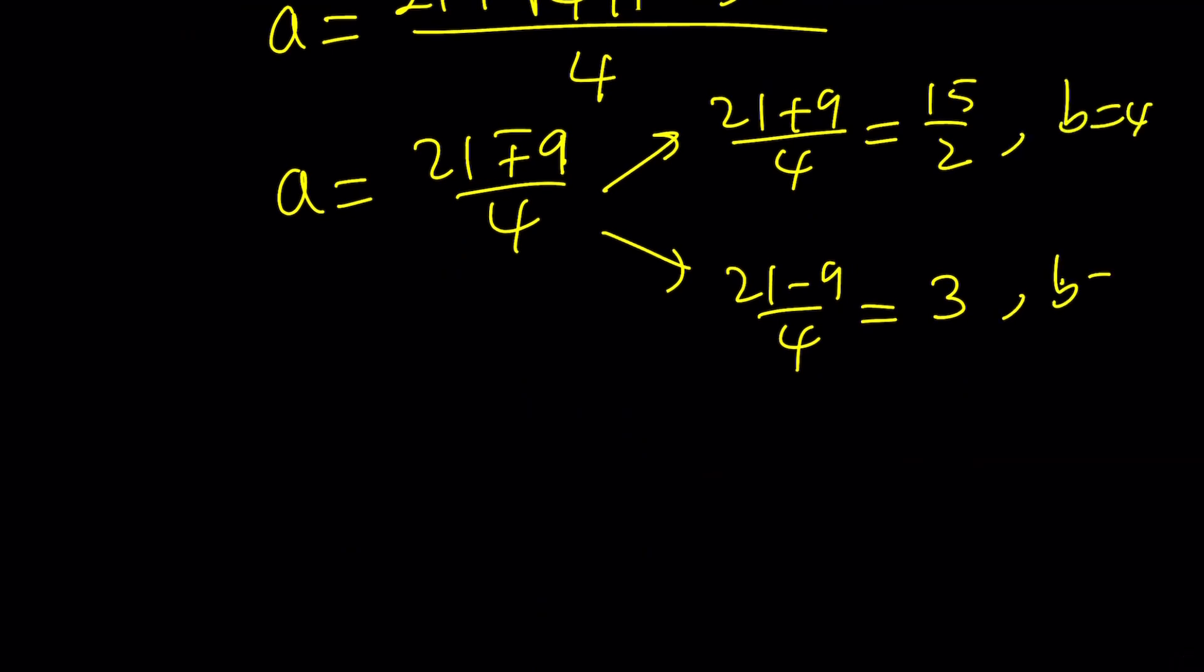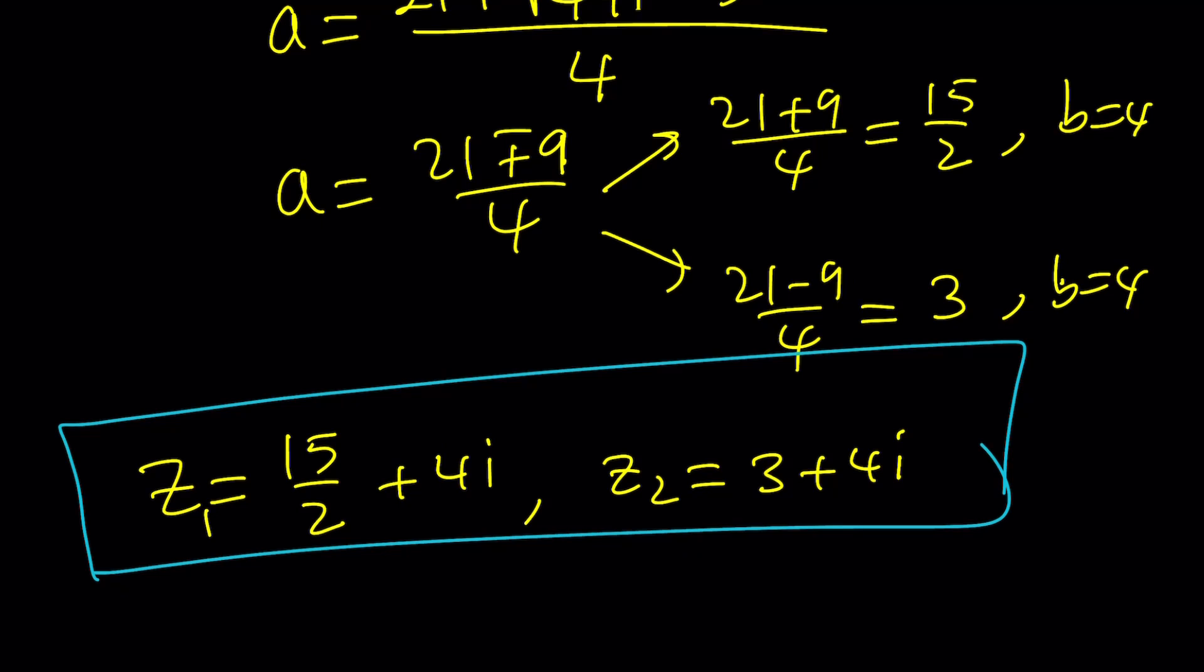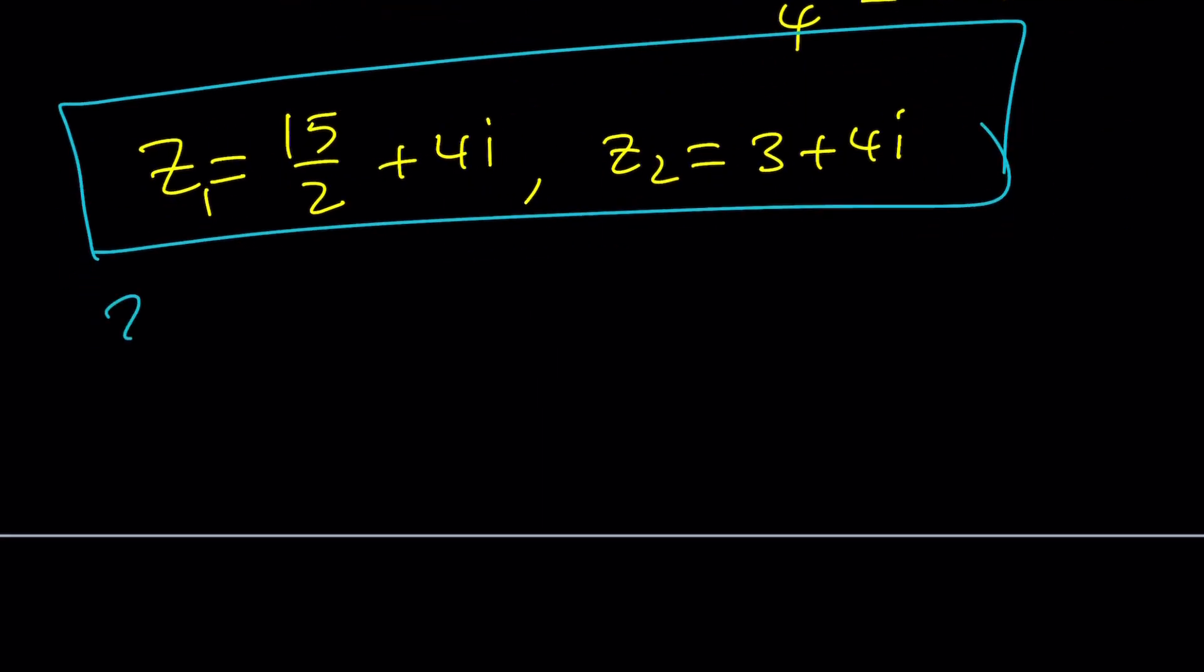So if you put these two together, what do you get? A equals 15 halves. So our Z values is going to be A plus B I, 15 over 2 plus 4 I. We could call this Z1. And Z2 is going to be A, which is 3, plus B I, which is 4 I. So we get two solutions. And that's pretty much it. But this is not the end of the video. So hang in there. Stick around because we're still going to do the second method. And I think the second method is usually cooler than the first method. I try to keep it that way.